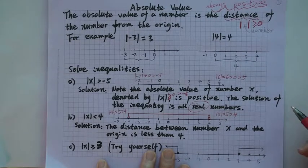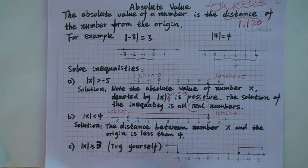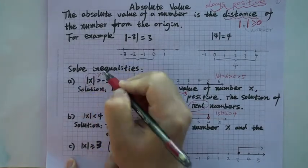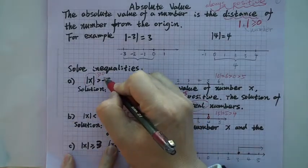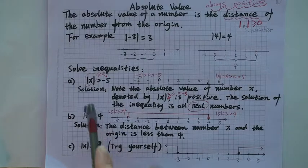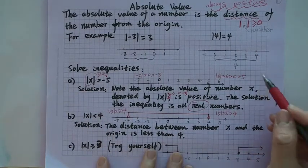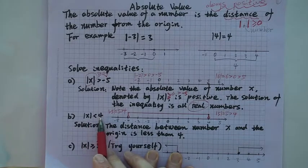So this one looks complicated but actually is easy. Because this number is all the time greater than or equal to zero, so of course it is greater than any negative number. That's part A. Now look at part B: the absolute value of x is less than 4.